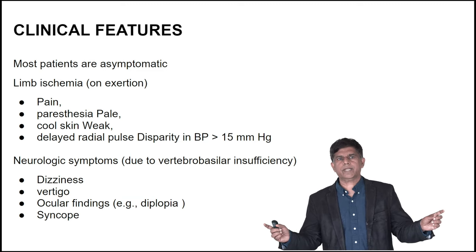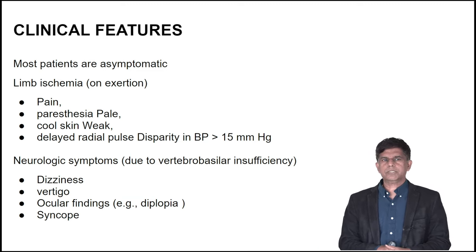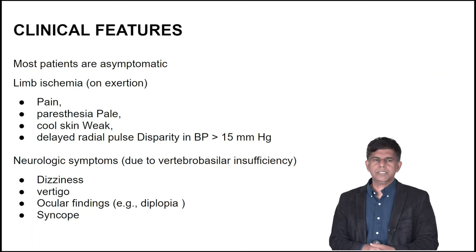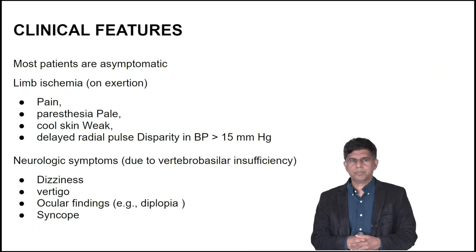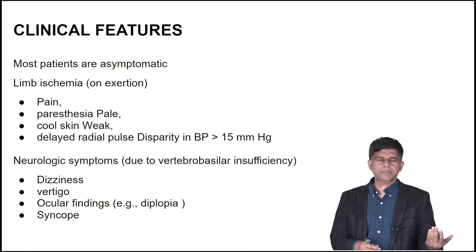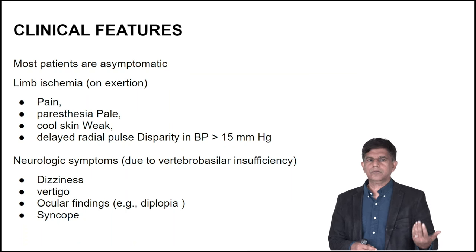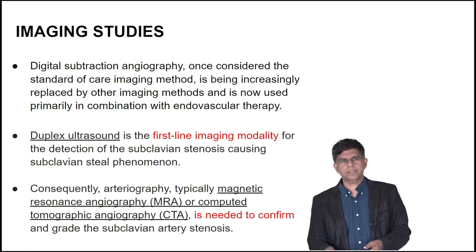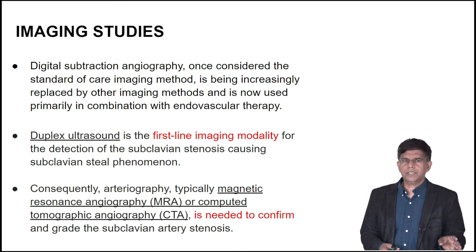The symptoms can present in various ways. Most patients present with limb ischemia, pain, paresthesia, cool skin, and weak or delayed radial pulse. Neurological symptoms can include dizziness, vertigo, syncope, and other neurological findings.